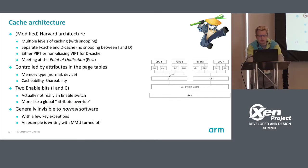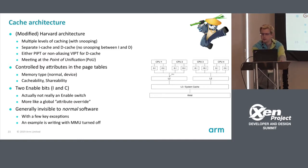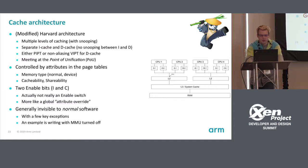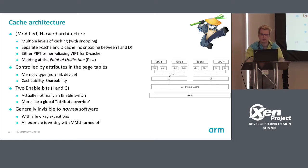The cache is controlled by a couple of attributes in the page tables: memory type (normal or device), cacheability, and shareability. These tell you whether data from a specific region will be cached or skip the cache. There are two enable bits — more like attribute overrides — so even if you decide to disable the cache it must still be used. In general this is invisible to normal software, but there is an exception: when the MMU is turned off.